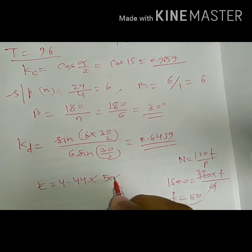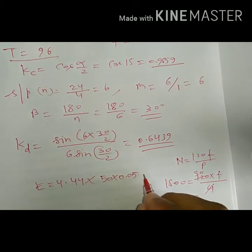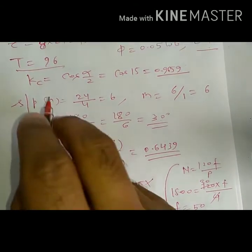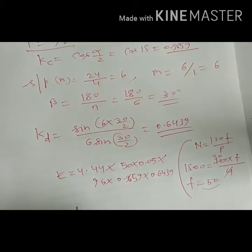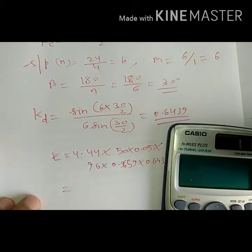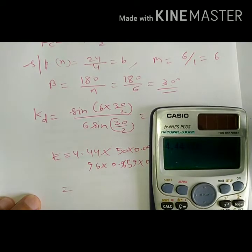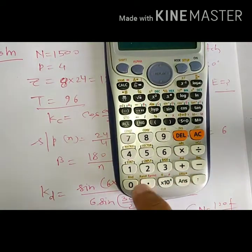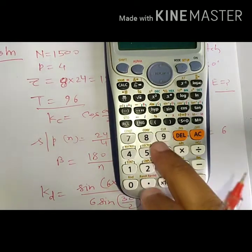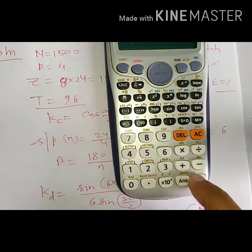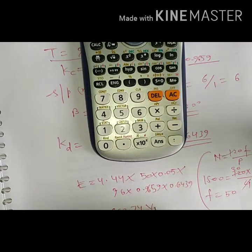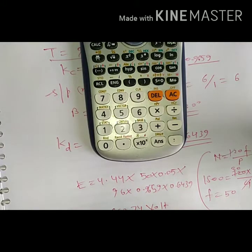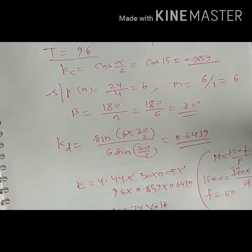So E = 4.44 × f × phi_m × T_ph × Kc × Kd = 4.44 × 50 × 0.05 × 96 × 0.9659 × 0.6439, which comes out as 662.74 volts. This is the total EMF induced in this particular case. Now let us go to the next numerical.